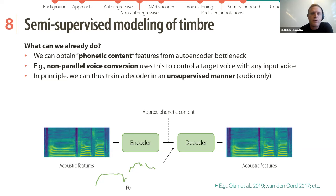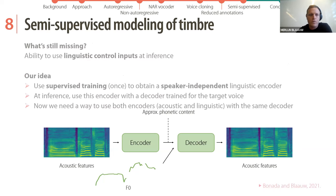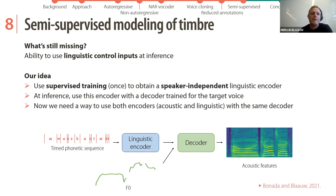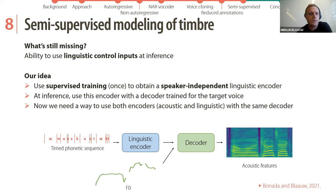In principle we can train a decoder in an unsupervised manner using only audio. What's still missing is the ability to use linguistic control inputs at inference. Our idea is to use supervised training once to obtain a speaker-independent linguistic encoder, and then at inference use this encoder with the decoder trained for the target voice, using both acoustic and linguistic encoders with the same decoder.